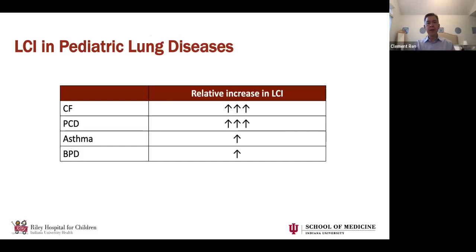To summarize, CF and PCD are conditions where we see markedly increased LCI in children. LCI is statistically significantly increased in asthma and BPD, but the relative increases are pretty small.